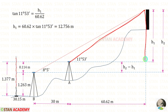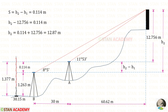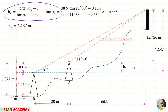Taking the smaller triangle and applying the tan theta formula: tan 11° 53' equals H1 upon 60.62. Solving, H1 equals 12.756 meters. Since H2 minus H1 equals S equal to 0.114 meters and H1 is known, we get H2 equal to 12.87 meters. Alternatively, we can use the derived formulas directly to find H1 and H2.